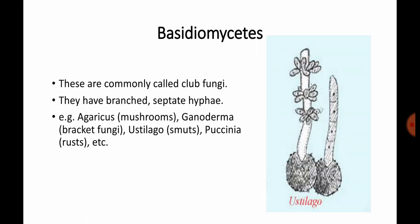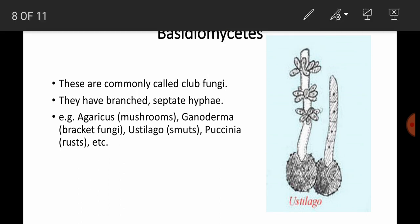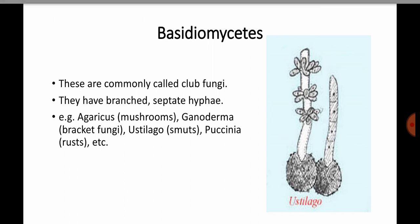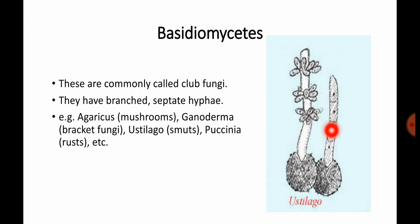Basidiomycetes are commonly called club fungi. They are branched and have septate hyphae. Examples include Agaricus, Ustilago, Ganoderma, and Puccinia (rust). Key characters of Basidiomycetes: called club fungi, septa are present so it is septate hyphae, and the body is branched. Agaricus is a common example.